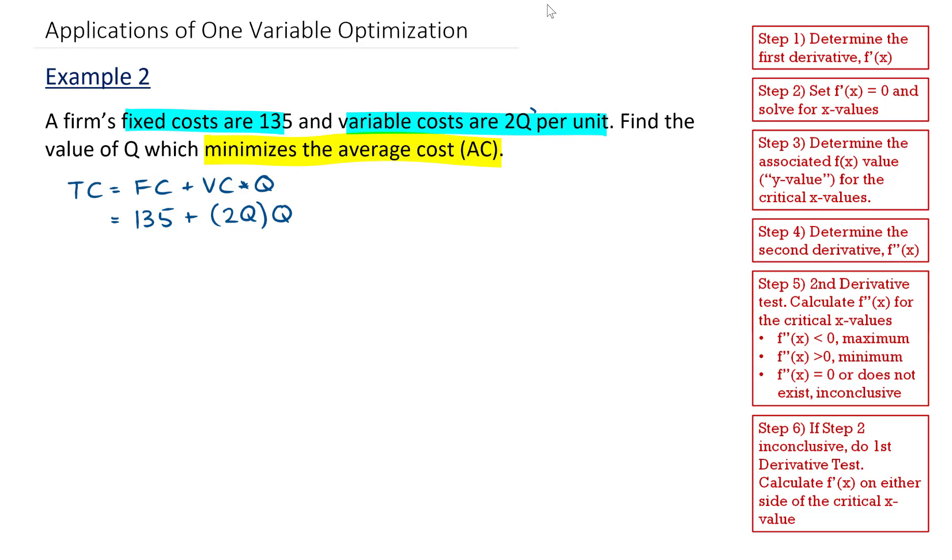Now be careful here. Variable costs change with relation to Q as well, so it's 2Q times Q. This gives me 135 plus 2Q squared as my total cost function.